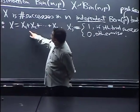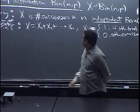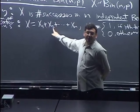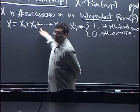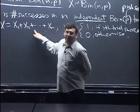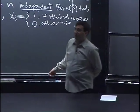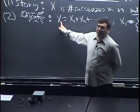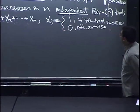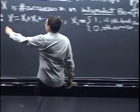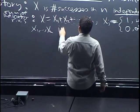This just says: add 1 every time there's a success, add 0 if there's a failure — that's how we count. What we've done is broken down a somewhat complicated distribution into a sum of very simple things that are just 0 or 1. The Xj's are independent. X1 through Xn are IID Bernoulli-P — I'll introduce that acronym now.